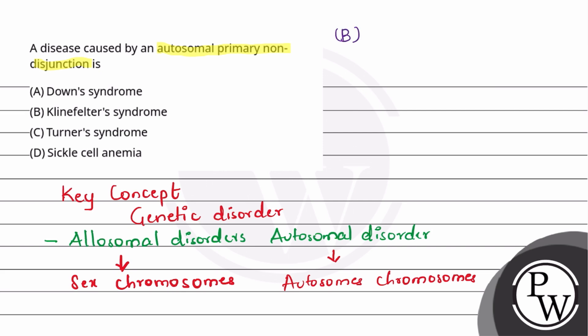B, the Klinefelter's syndrome. There is an addition of extra X chromosome in the allosomal chromosomes. Here, allosomal male is XY and an extra X chromosome is added. This condition is called Klinefelter's syndrome. This is allosomal because here the allosomal chromosome is added. So Klinefelter's syndrome is wrong.